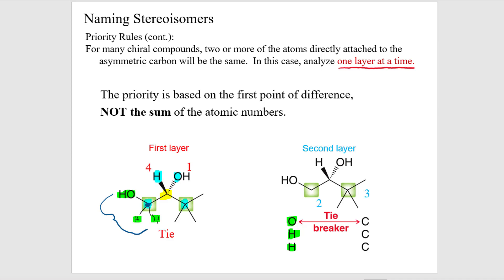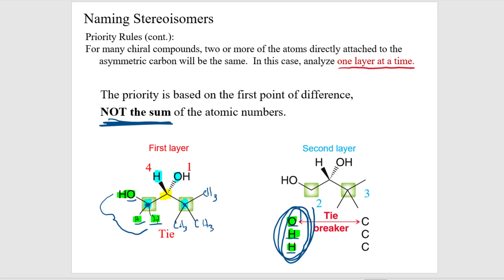You don't count the carbon of the tie — you've already counted it. You look at the atoms directly off: one side shows oxygen, hydrogen, hydrogen; the other side shows carbon, carbon, carbon. You're looking for the highest card — it's not a sum of the groups. Since oxygen beats all the carbons, the priority wins on the oxygen side. Even though it had little hydrogens, you just look for the highest card. That's why the one on the left is second priority and the one on the right is third — it's whoever has the highest next card.